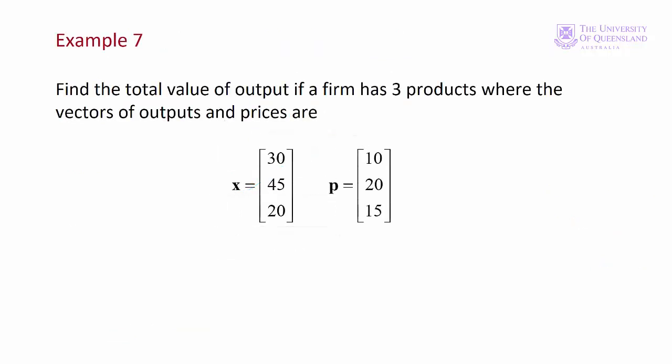We'll finish up with an example. A firm has three products, where the x-vector represents the output and the p-vector represents the prices. We want to find the total value of output.